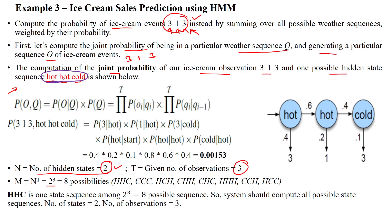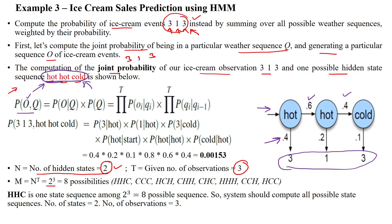For example, taking one of the sequences from the eight: first day hot, second day hot, third day cold. We have only observations and emission probabilities and state transition probabilities; we don't know the hidden sequences. As an assumption, we are taking this one. Now we are going to calculate the probability of first day hot, second day hot, third day cold based on those observations. The probability of observation given state multiplied by the probability of the hidden states — computed as a product over the time period. Three time periods: day one, day two, day three.